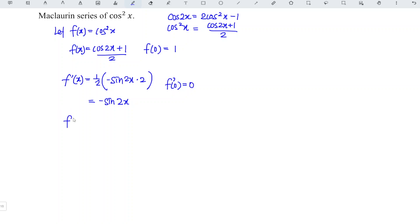Then we differentiate for the second time, negative remain. Differentiating sine is cos 2x. Differentiate the inner function. So we have 2. So at the point 0, cos 0 is 1. So negative 2 times 1, negative 2.